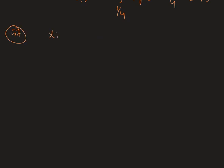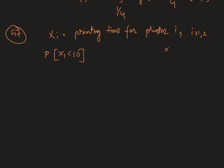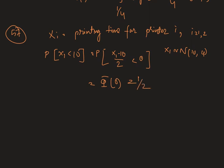Let X_i denote the printing time for printer i, where i is 1 and 2. We need to find P(X1 < 10), where X1 follows Normal(10,4). This gives P((X1 - 10)/2 < 0), which equals Φ(0), the CDF of the standard normal evaluated at 0, which equals 1/2.